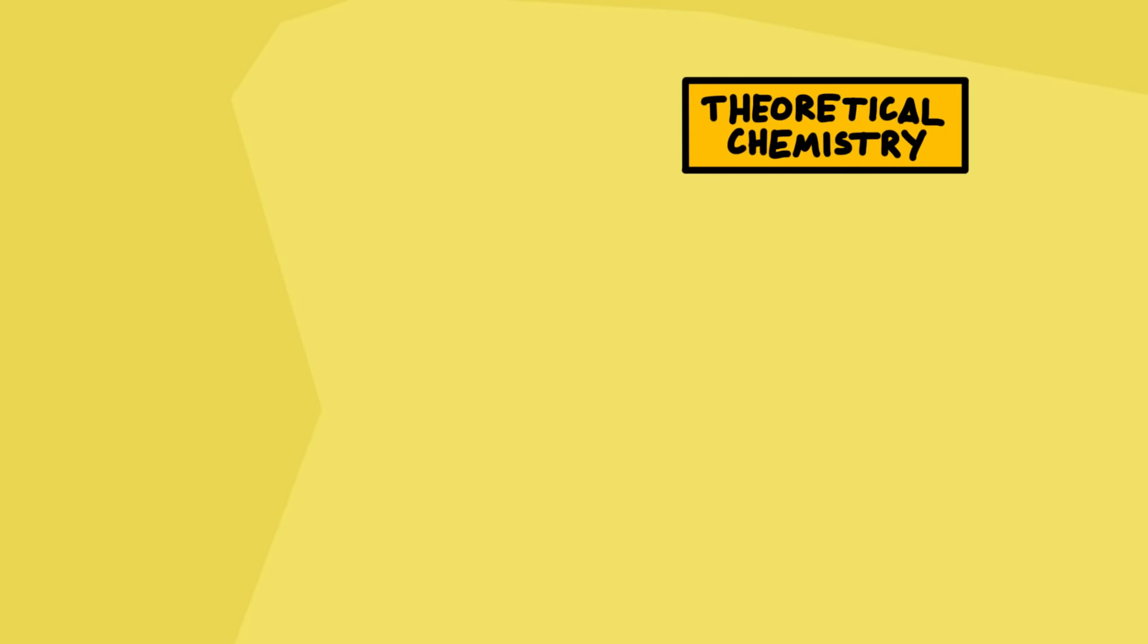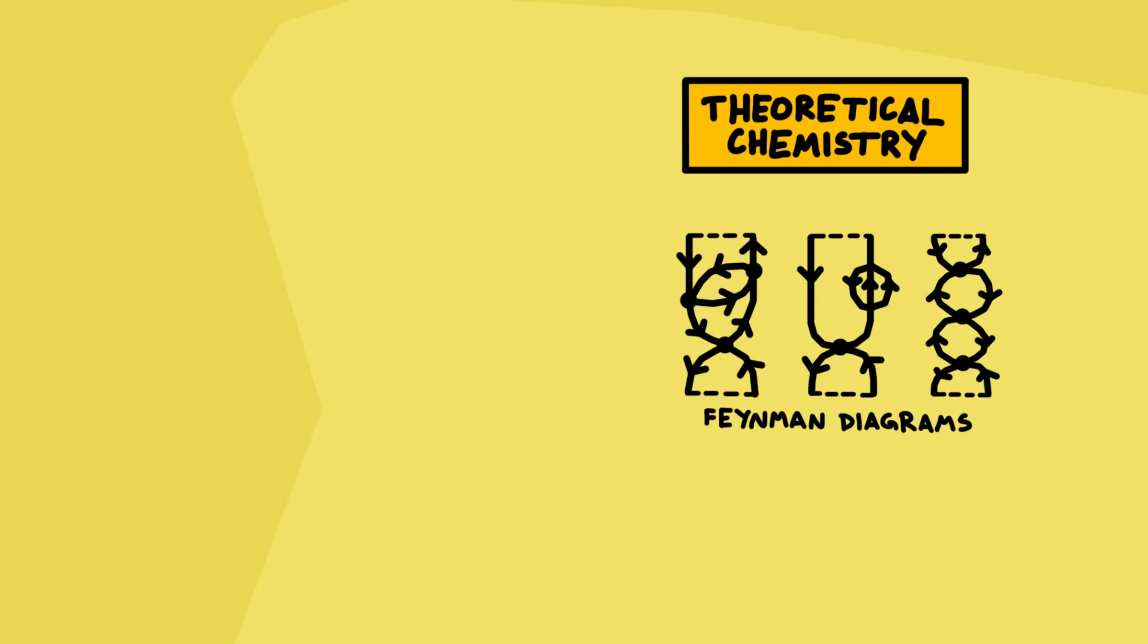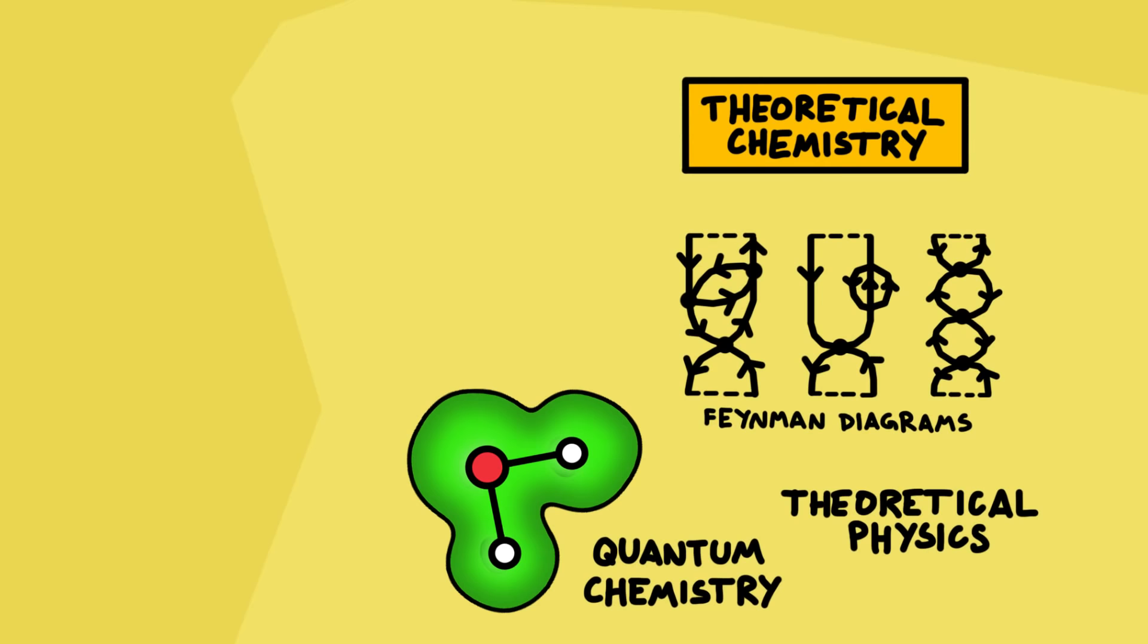Theoretical chemistry attempts to explain the structures of atoms and molecules and how they interact using mathematical methods. It's very closely related to theoretical physics and quantum chemistry, and often uses techniques in computational chemistry, where atoms, molecules and reactions are simulated in a computer.